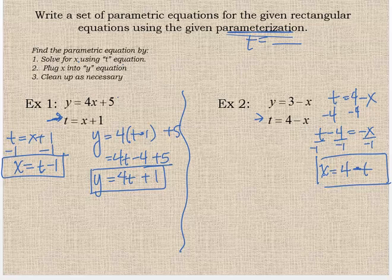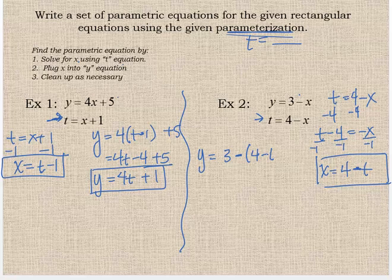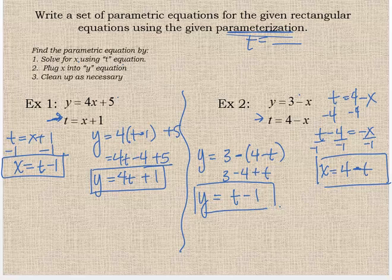Now I'm going to take this equation for x and plug it into the y equation and clean it up. Distribute that negative one minus four. Negative times a negative is a positive. So I can continue cleaning up here. I'm going to put the t in front. Three minus four is negative one, so it's t minus one. So that's what y equals. There are your two equations.